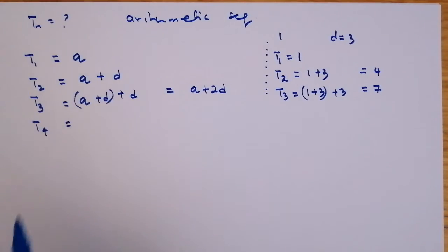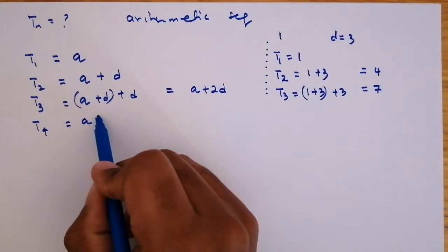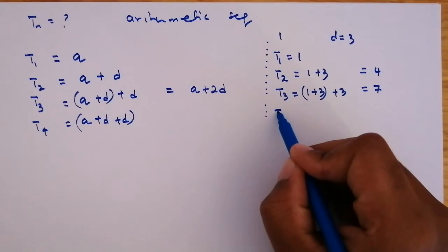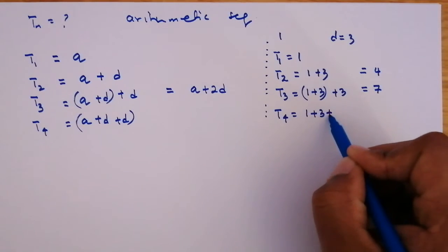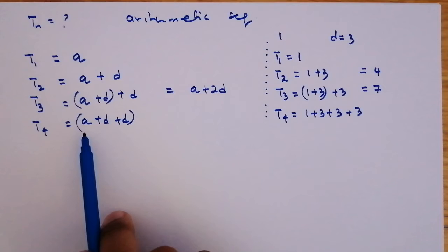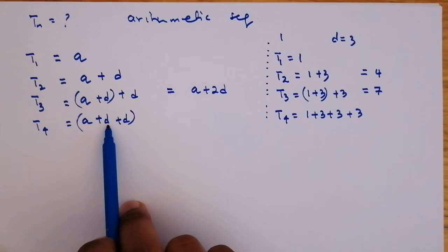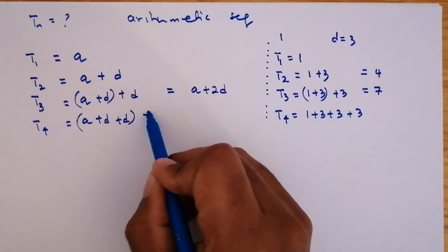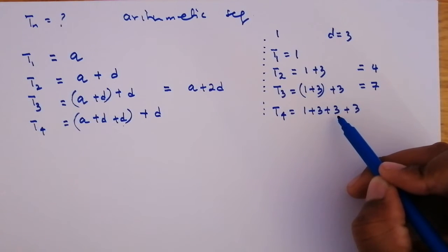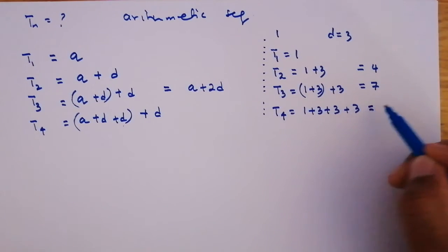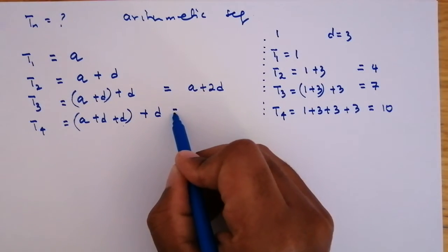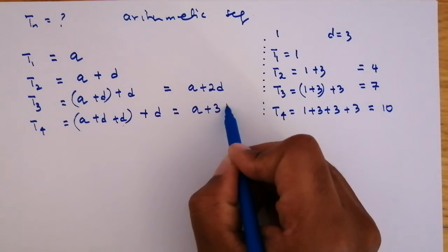The fourth term will be the third term plus 'd'. So it's a plus 'd' (the second term) plus 'd' (the third term) plus 'd', giving the fourth term. Simplifying, that is a plus 3d. Here, T4 equals 1 plus 3 plus 3 plus 3, so 3 plus 3 plus 3 plus 1 is 10.